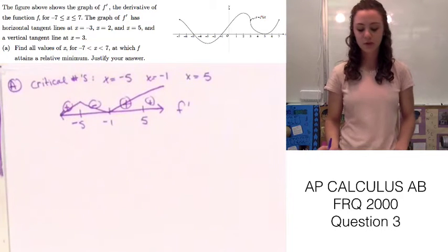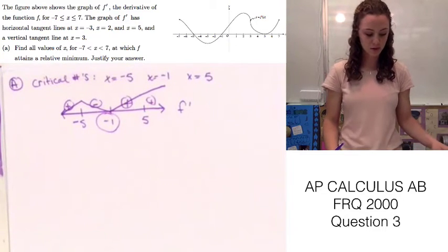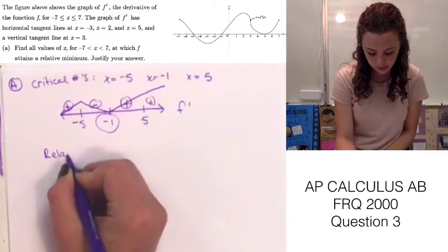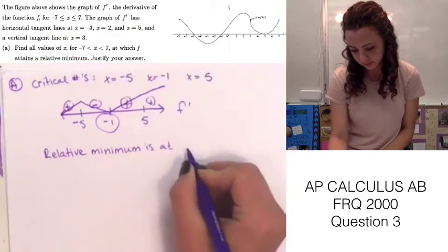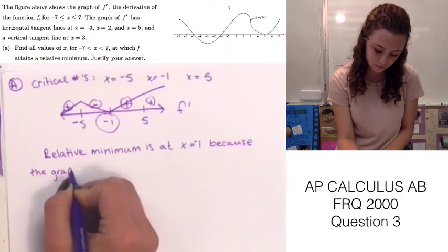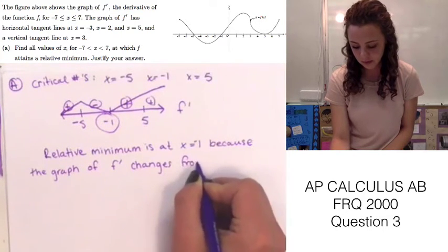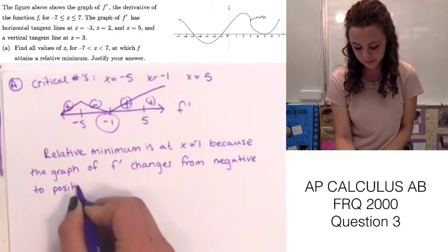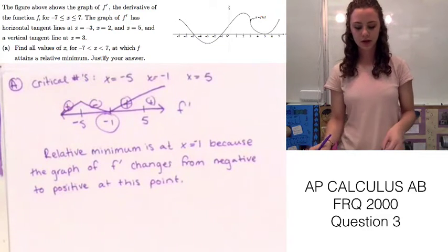We're trying to find the relative minimum. When the sign of f prime goes from negative to positive, that indicates a minimum. So x equals negative 1 is the relative minimum, because the graph of f prime changes from negative to positive at that point. That's all you need for Part A.